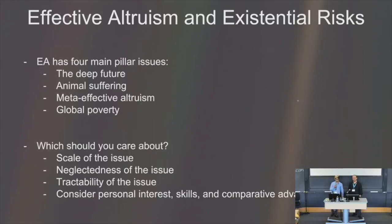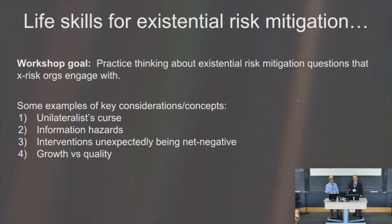Effective altruism has these four main pillars: the deep future, animal suffering, meta-effective altruism, and global poverty. If we're trying to think about which issues we should be working on, there's generally a way of thinking about this employed by 80,000 hours — thinking about scale, neglectedness, and tractability. You can also consider your personal interests, your skills, and how good you are in that domain relative to everyone else. Working on existential risk mitigation seems like a pretty solid way to go, and we're here to help generate some life skills for existential risk mitigation.